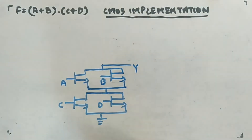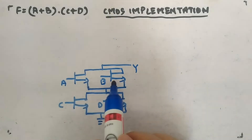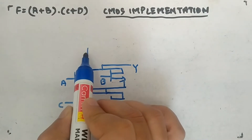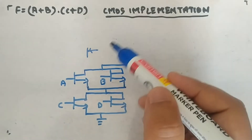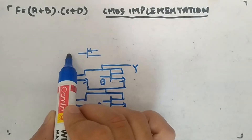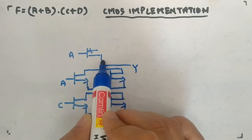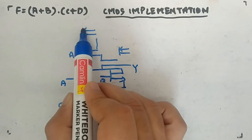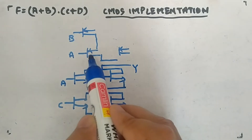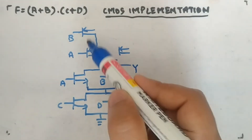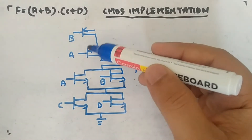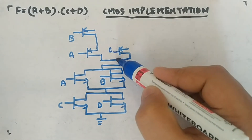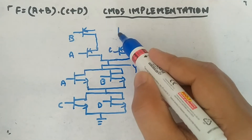Now I have to make the PMOS side. Whatever is in series you have to do in parallel, and whatever is in parallel you have to do in series. These NMOS guys are in parallel, so for PMOS I make them series. The arrow will be here because we are making the CMOS version. So a and b — since a + b is parallel in NMOS — this becomes series here. Similarly, parallel converts to series for c and d as well.